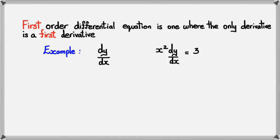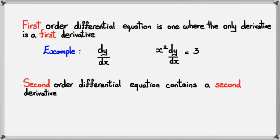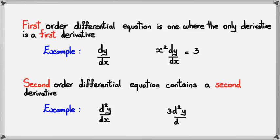If you're looking at a second order differential equation, that's when you have a second derivative. An example would be something like d squared y over dx squared. Or another example: d squared y over dx squared minus dy/dx equals 5. Sorry, I forgot to put the 2 at the dx squared. So when you have d squared y over dx squared, that's a second order differential equation. If it has just dy/dx, like in the first example, then it's a first order differential equation.